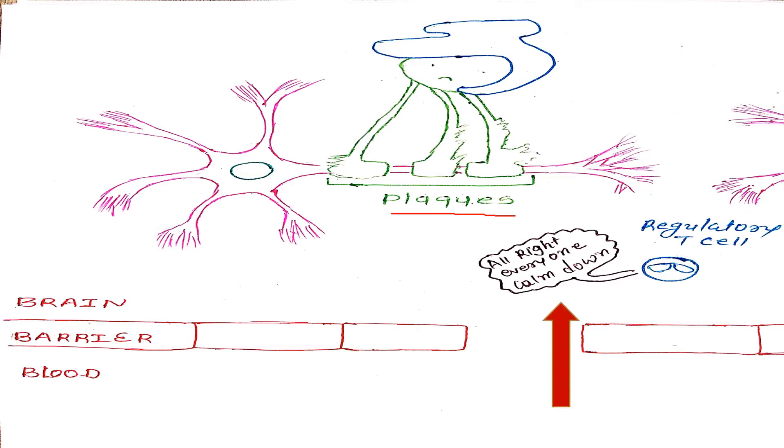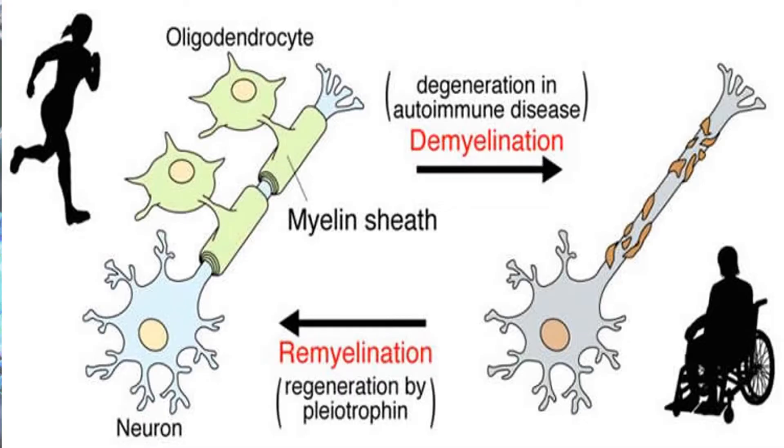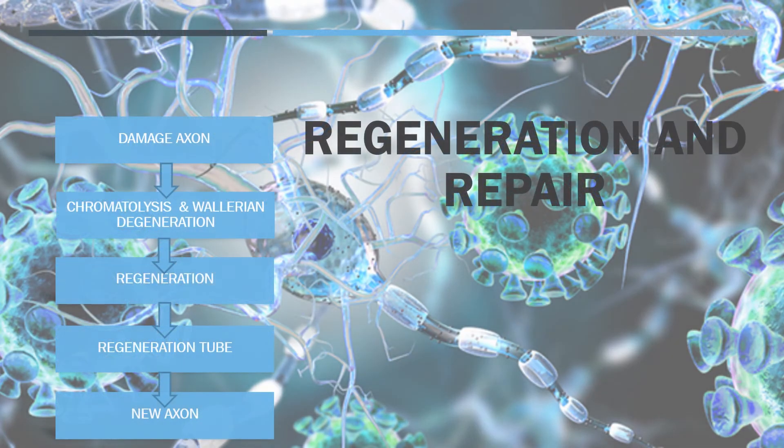Then regulatory T cells come and say, like Big B, alright everyone, calm down. And what happens? According to the order of Big B, meaning our regulatory T cells, inflammatory reaction is reduced and remyelination will start. Oligodendrocytes heal and extend out a new myelin sheath and recover the neuron. The whole process is called remyelination. This process is divided into five stages which you already know and do remember.